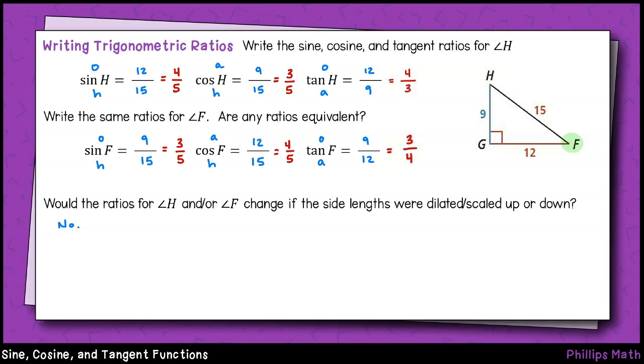Another way of proving that the ratios won't change is by thinking about the basic definition of a function. If the angles serve as the input and the ratios serve as the output, we cannot have more than one output for the same input angles. Every input must be paired to one and only one output.